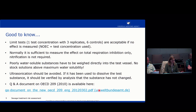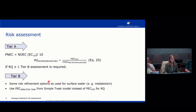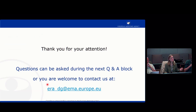The risk assessment follows the same approach as for surface water or other environmental media. The risk quotient (RQ) for microorganisms is the PEC value divided by the PNEC value, and if this quotient is equal to or above 1, you have to proceed to Tier B of the assessment. Here you have the same refinement options as for surface water — for example, refining your PEC value for metabolism in humans, as was shown earlier, or using the PEC aeration tank from SimpleTreat instead of the PEC sewage treatment plant for the risk quotient. Thank you very much for your attention.